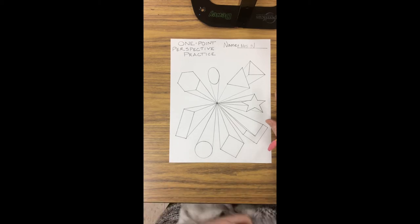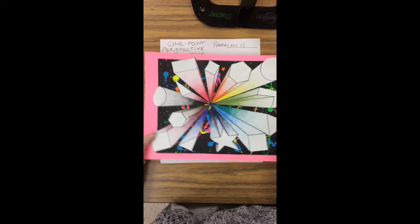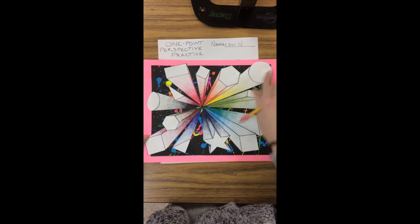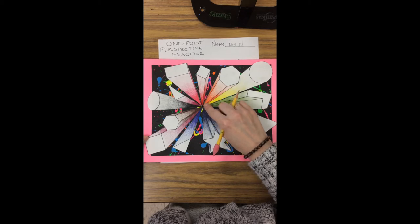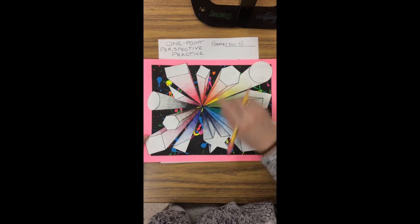Okay, so when I'm done making all of my lines to the vanishing point, on our actual project, it's going to be like this that we're going to start, we're going to also be using value, which is where you shade either dark or medium or light, depending on how hard you're pressing with your pencil.